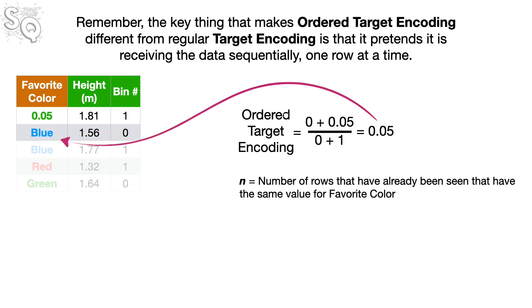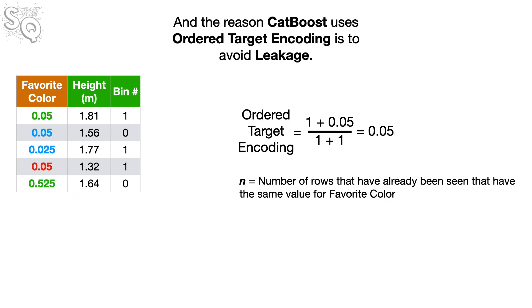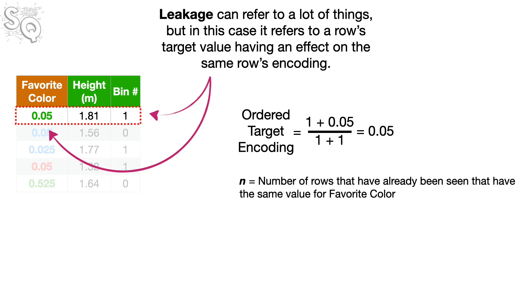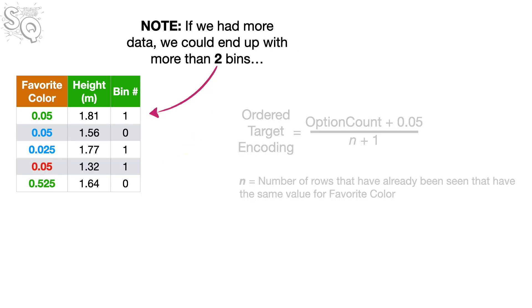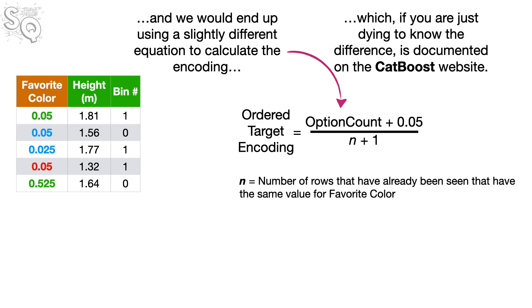And now we can use the bin numbers, instead of height, to do Ordered Target Encoding, just like we did in CatBoost Part 1. Remember, the key thing that makes Ordered Target Encoding different from regular Target Encoding is that it pretends it is receiving the data sequentially, one row at a time. And the reason CatBoost uses Ordered Target Encoding is to avoid leakage. Leakage can refer to a lot of things, but in this case, it refers to a row's target value having an effect on the same row's encoding.